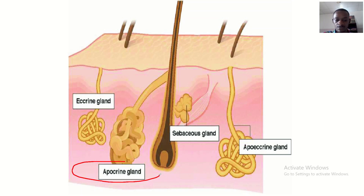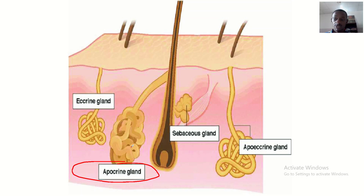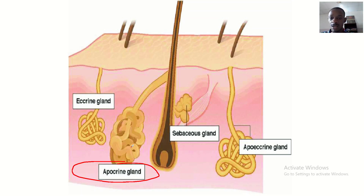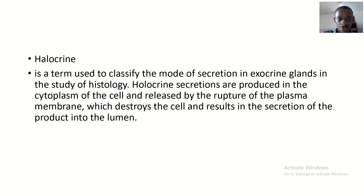Here is an example of an apocrine gland secreting oily substances into hair follicles. These oily substances are actually odorless, but when they reach the skin surface they are broken down by bacteria — that's when the odor starts.